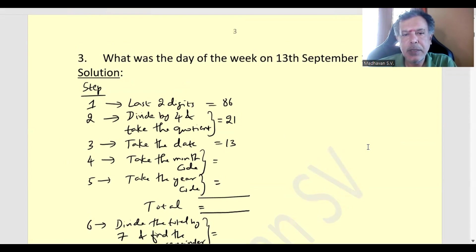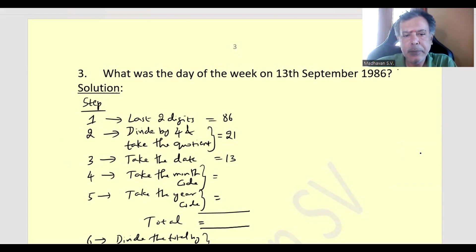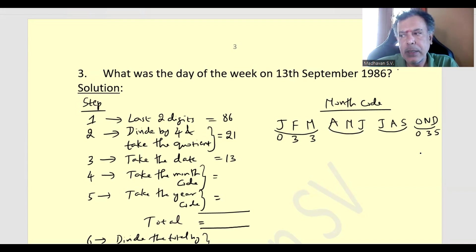Now let us consider our month code. Let us write the months: January, February, March, April, May, June, July, August, September, October, November, December. We will write 0, double 3. Here we will write 0, 3, 5. Here we will write 6, 1, 4. This is 6, 2, 5. So the code corresponding to April is 6, the code corresponding to June is 4, like that. Here the month is September. September's code is 5. So we will take 5.